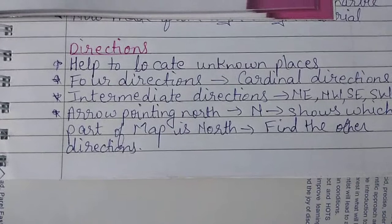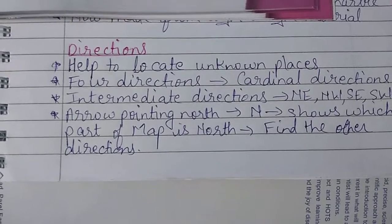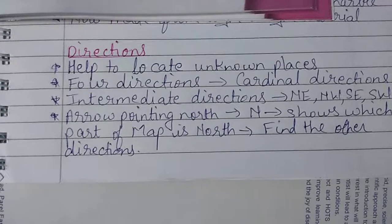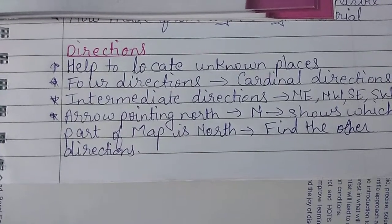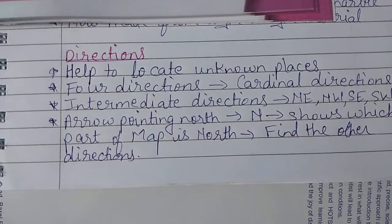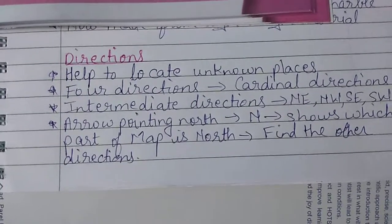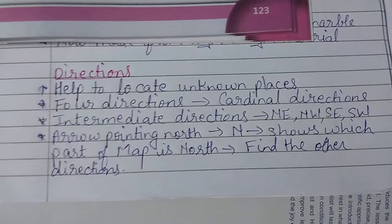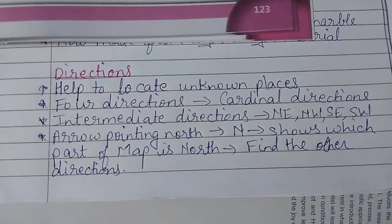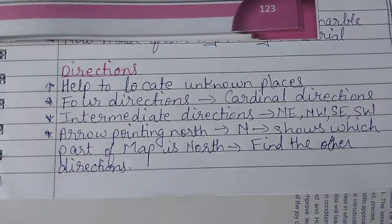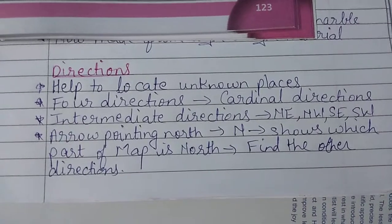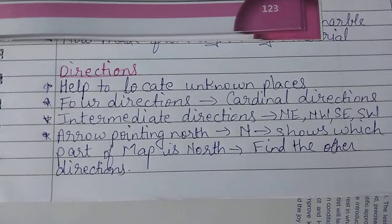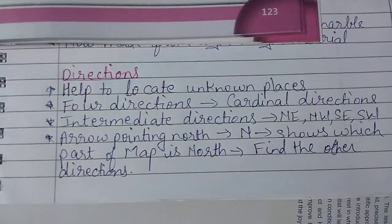North, south, east, and west are the cardinal directions. These are further divided into four intermediate directions. They are named northeast, northwest, southeast, and southwest. So northeast, northwest, southeast, and southwest are the four intermediate directions.